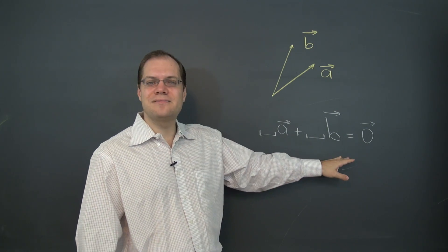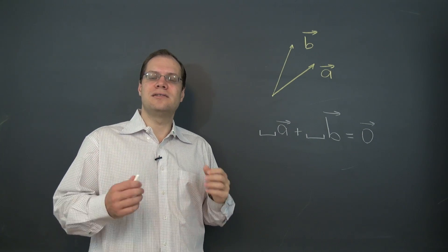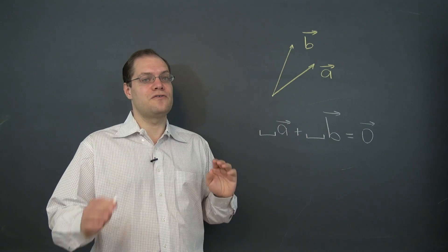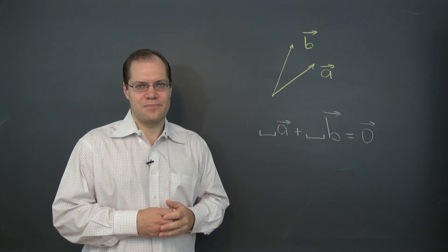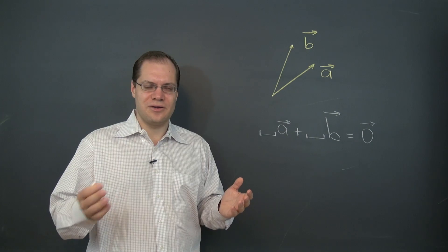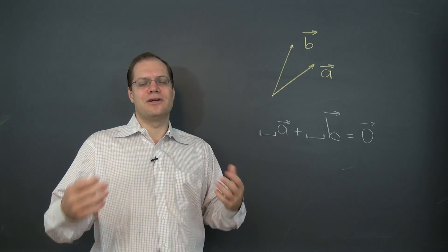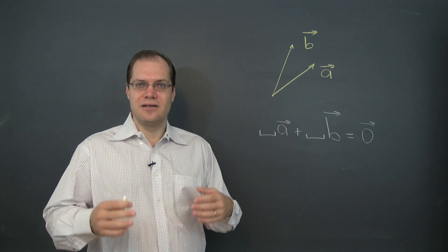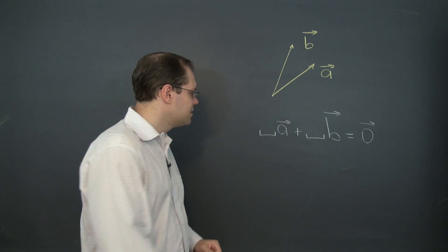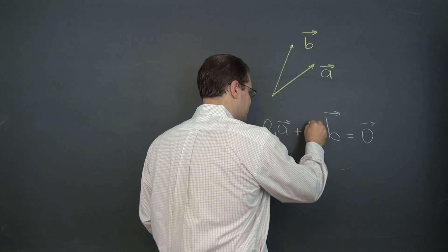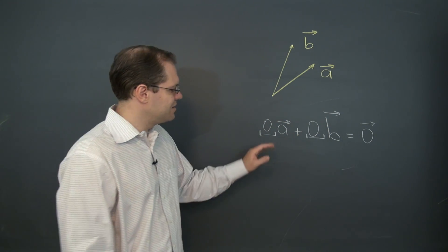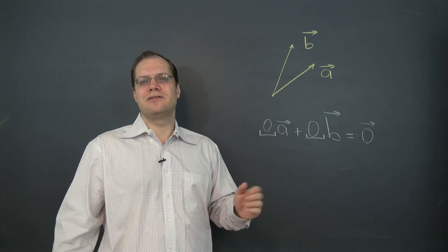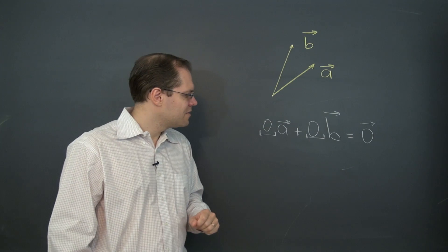Let's see if that still holds according to the second definition. Does there exist a linear combination that equals zero? Well of course there does — there always does. No matter what set of vectors you take, whether they're linearly dependent or independent or just one vector, there always exists a linear combination that yields the zero vector. It's the linear combination of all zeros. This linear combination, for all vectors whether linearly dependent or linearly independent, equals zero.